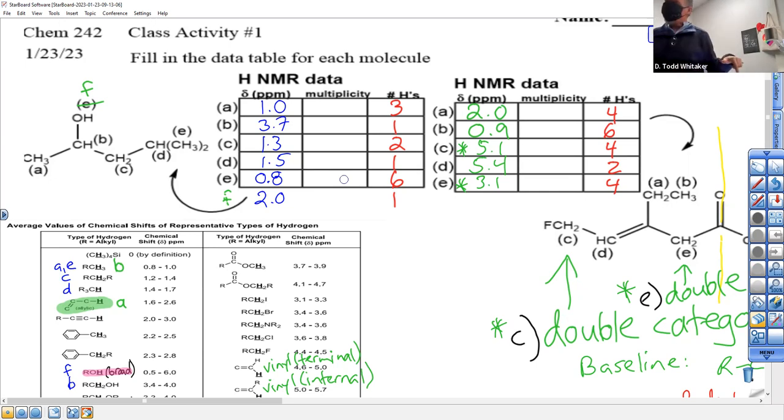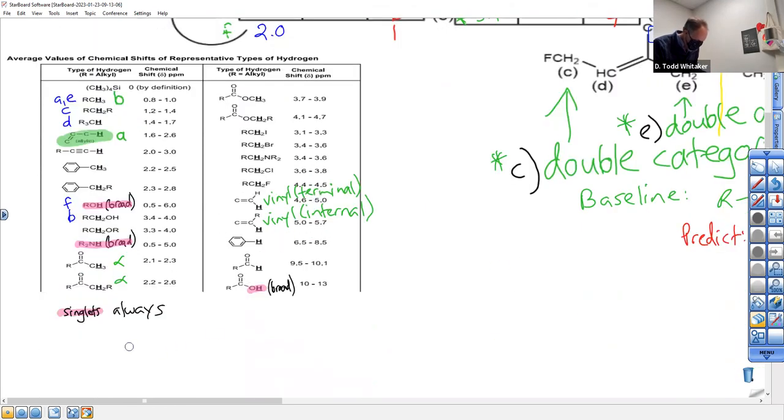So we need to know what a neighbor is in the context of NMR spectroscopy. Neighbor has a very exact definition, but don't try to expand it. In fact, my definition will explain why these are always singlets as well. Neighbors are hydrogens on adjacent carbon. End of definition. So you can't be a neighbor if you're not attached to carbon.